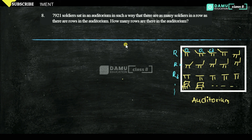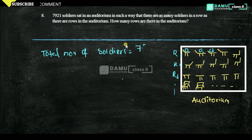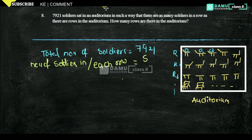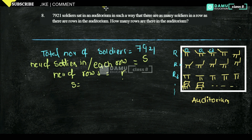So what are we given? Total number of soldiers is 7921. The condition given is: number of soldiers in each row — let's call it S — and number of rows — let's call it R — and S is equal to R.